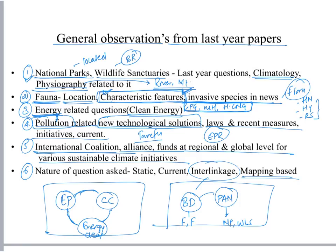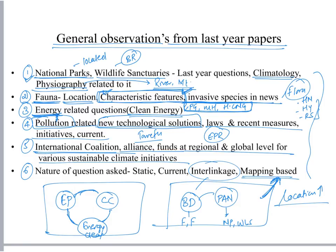This is the way one should approach these topics. While studying biodiversity and protected area networks, one should have an atlas for mapping, because mapping and location-based questions are increasing. One needs to know where a particular national park is located. These are some general trends from the last few years that UPSC is following. Biodiversity should be studied with national parks, and energy, pollution, and climate change should go together, along with international coalitions and efforts.